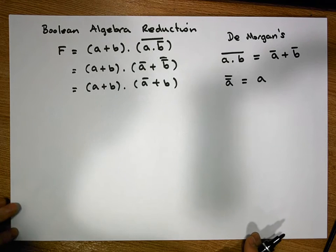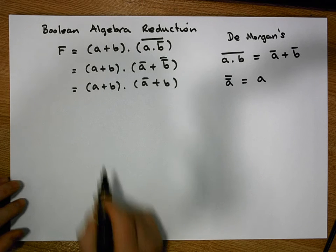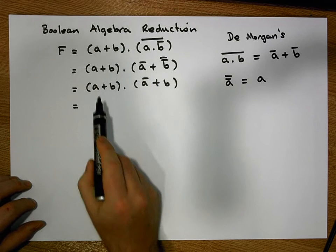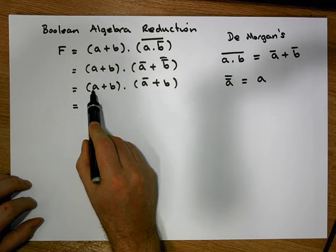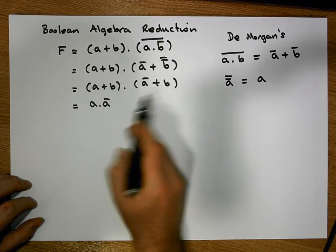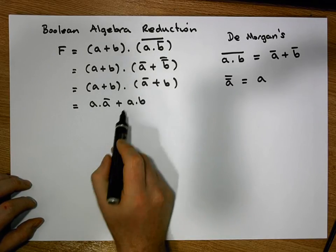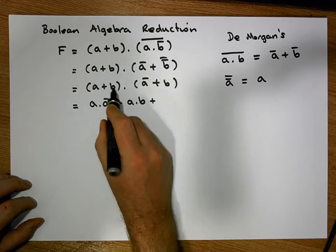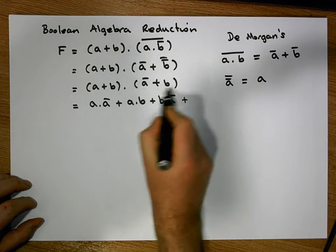At this stage we have another rule called the distributive law that will help us solve this problem. It can look a little strange when applied, so we'll apply it in stages. We distribute A across both terms: A AND Ā, and A AND B across the OR. Then B must be ANDed with Ā and B must be ANDed with B.